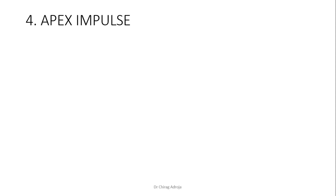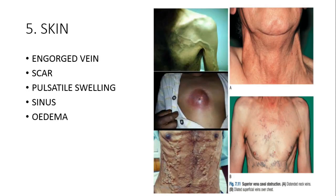Apex impulse is more clearly described in our cardiovascular system inspection and palpation parts. From a respiratory point of view: apex impulse is shifted to the opposite side when a patient develops pneumothorax or hydrothorax on that side, and shifted to the same side when the patient develops fibrosis.